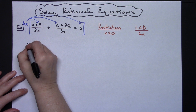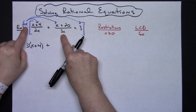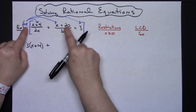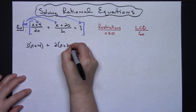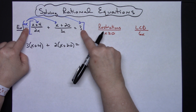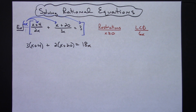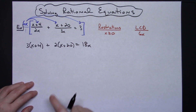So I have 3 times the numerator x plus 4. Then I take 6x and divide by 3x — 6x divided by 3x is 2 — so 2 times what's in the numerator. The last term is not a fraction, so I just multiply straight: 6x times 3 gives me 18x. If you multiply through by the least common denominator correctly, you should eliminate all of your fractions.